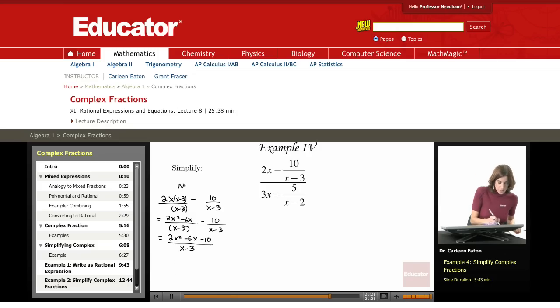So first I was dealing with the numerator. So now I'm going to write my new numerator up here, which is just a rational expression of 2x squared minus 6x minus 10 all over x minus 3. So I took care of that.